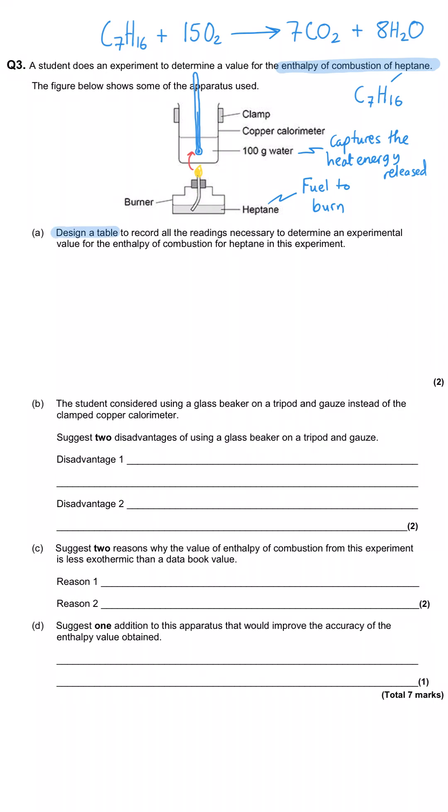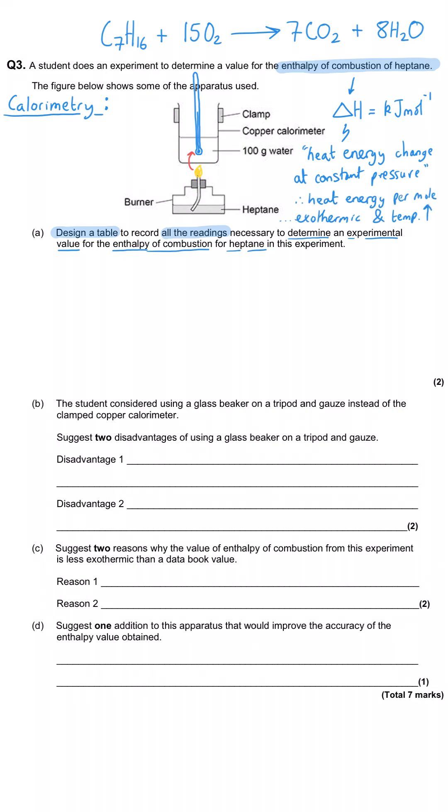We've been asked to design a table to record all of the readings necessary to determine an experimental value for the enthalpy of combustion for heptane in this experiment. Well we need to be aware of the big picture for this calorimetry experiment. Ultimately we're going to be working out an enthalpy change in kilojoules per mole. And an enthalpy change is a heat energy change at constant pressure. So essentially what we're working out is the heat energy per mole. And this is going to be exothermic so this value will be negative and the temperature is going to rise. And that's a big clue as to which bits of data we're going to need to collect.